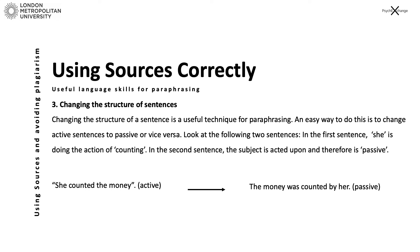Another really easy way to use sources correctly is by changing between active and passive sentences. 'She counted money' is active because she — the subject — is doing the action of counting. In passive form, she is being acted upon. Another example: 'Children love ice cream' is active; 'Ice cream is loved by children' is passive. There are settings in Microsoft Word that point out when you are writing in passive sentences — a really good way of keeping track.